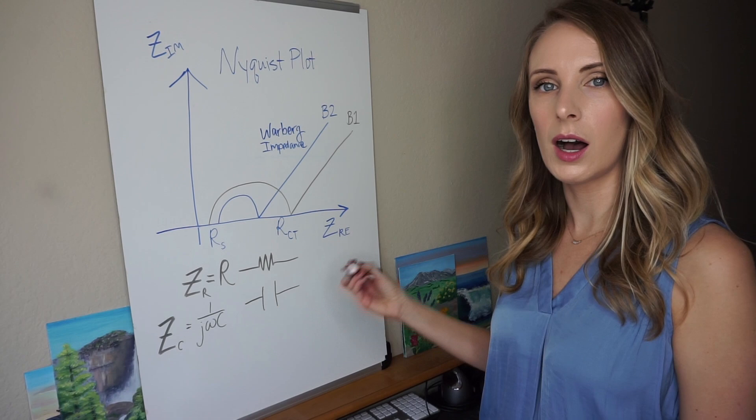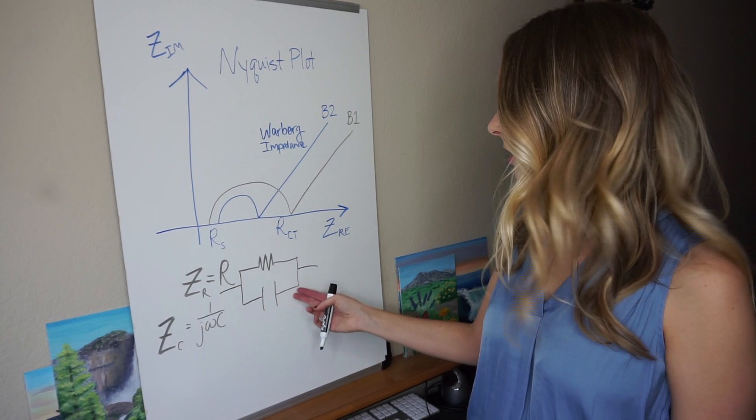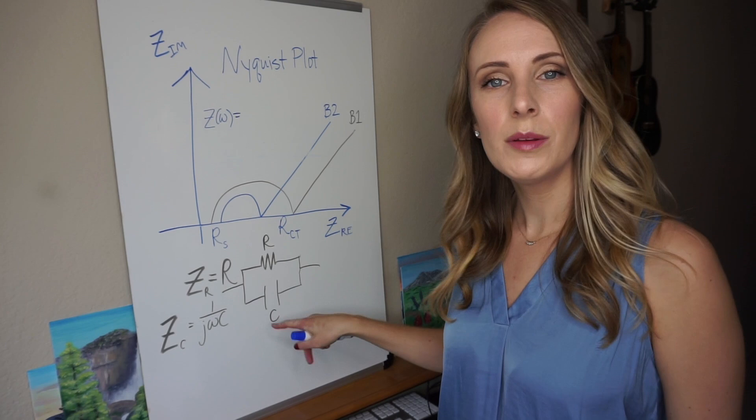So it turns out that this semicircle shape is actually the equivalent of a resistor and a capacitor in parallel. So this is just a little diagram of what you would see denoted when you have a resistor and a capacitor in parallel.